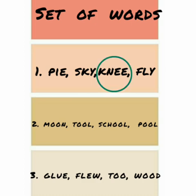Set two: moon, tool, school, pool. Which one does not rhyme? Moon. So we will circle 'moon.' Set three: tree, glue, flew, to, wood. Which one? Wood. Yes, it's 'wood,' so we circle 'wood.' So the words that do not rhyme in these sets are knee, moon, and wood.